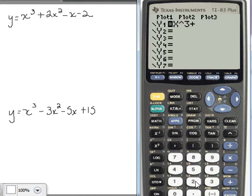So we're going to type plus 2x squared, you can use the squared key or the caret key, minus x minus 2. Make sure you're using the minus key and not the negative key, unless the leading coefficient is negative.